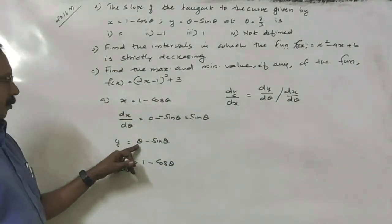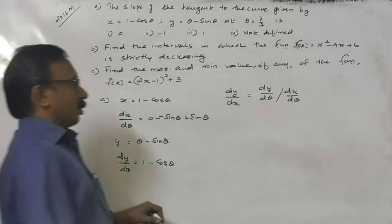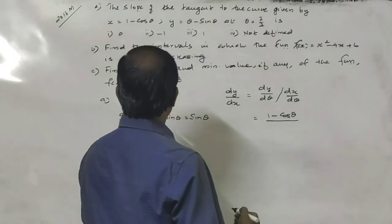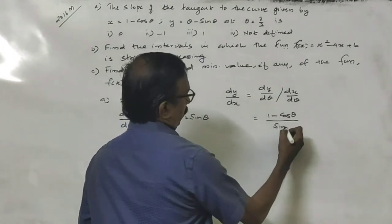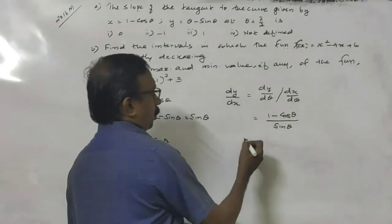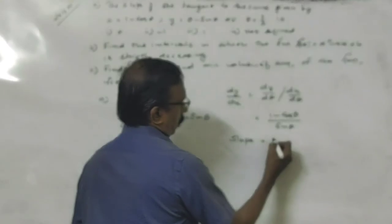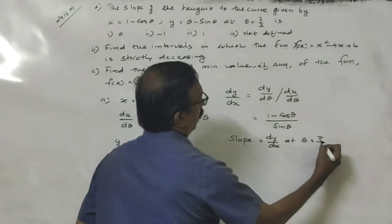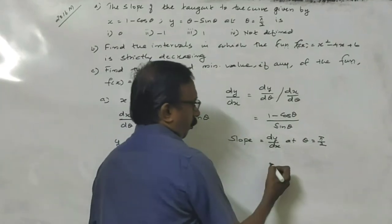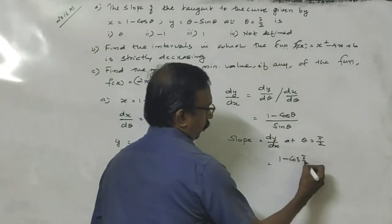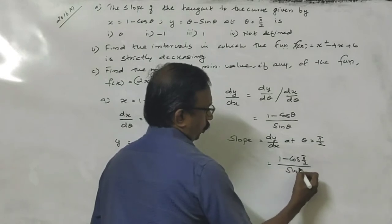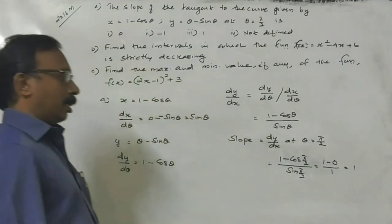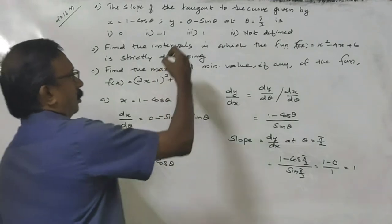At θ equal to π/2, dy/dx equals (1 minus cos(π/2)) divided by sin(π/2). cos(π/2) is 0 and sin(π/2) is 1. Therefore, the answer is 1. This is the answer.